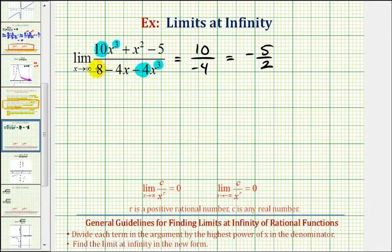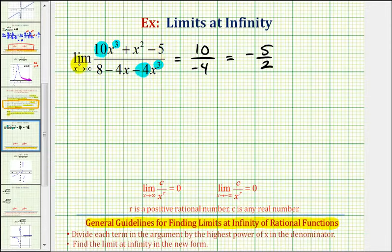So this is how we can determine our limit using the shortcuts involving the degree. But we can also determine this limit using the general guideline given below. The general guideline for finding limits at infinity of rational functions is to divide each term in the rational function by the highest power of x in the denominator. And then once we do this, we can find the limit in the new form. So because the highest power of x in our denominator is x to the third, we'll divide each term by x to the third to show another method for determining this limit.